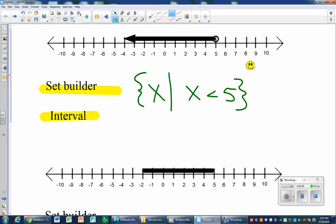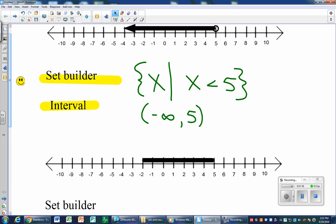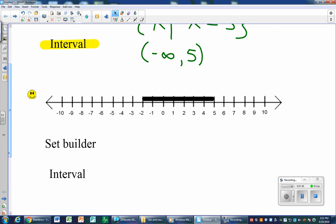Now interval notation. If you notice, our smallest number - wait, there isn't a smallest number, it just keeps on going towards negative infinity. So in interval notation we have to start with our smallest number, negative infinity. Since that's not an actual number you can stand on, we have to have a parenthesis here. All the way up to our largest number, which is five, but it's not included, so that is still a parenthesis.